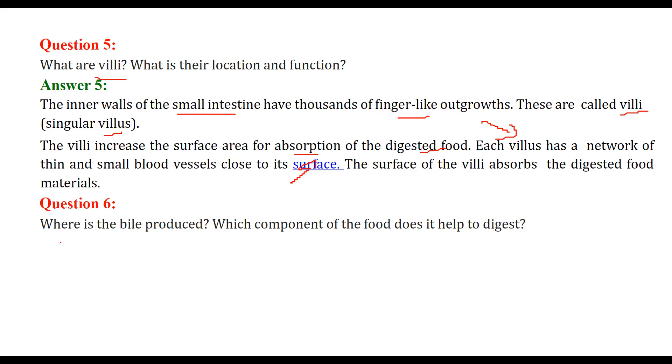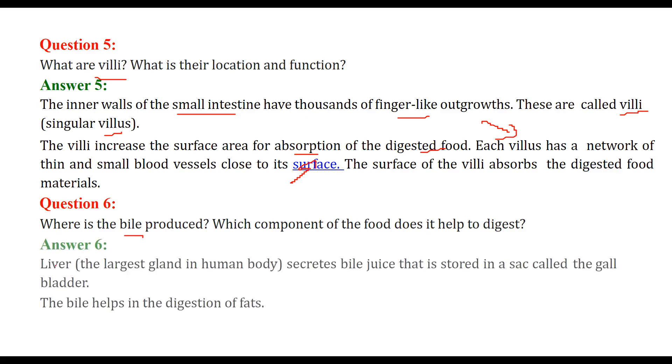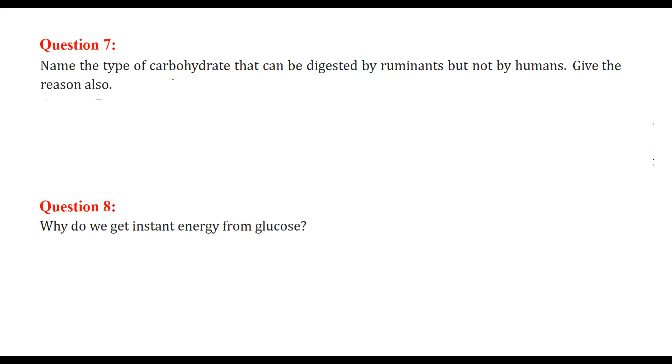Where is the bile produced? Which component of food does it help digest? Liver, which is the largest gland in human body, secretes bile juice that is stored in a sac which is called as a gall bladder. This bile helps in the digestion of fats.